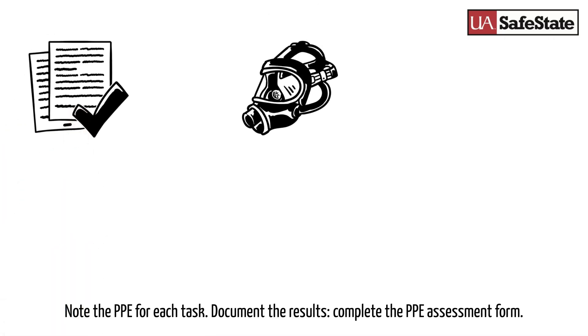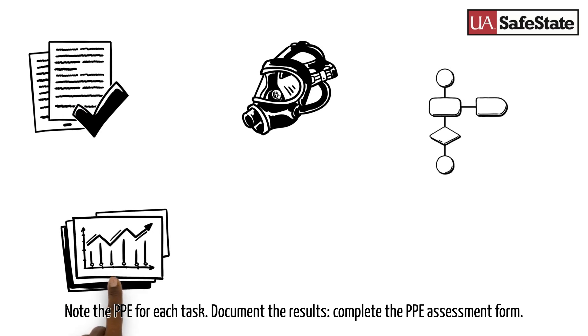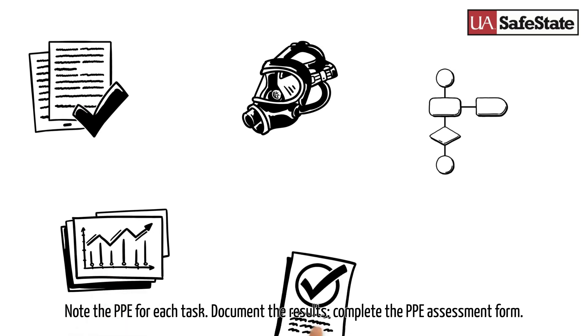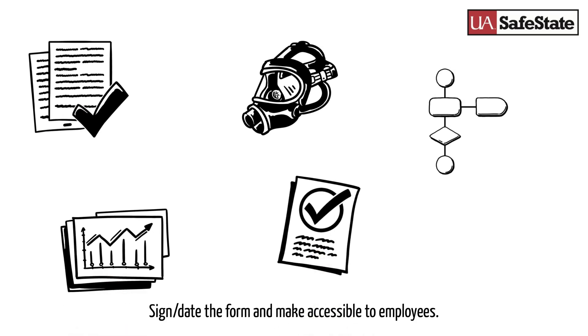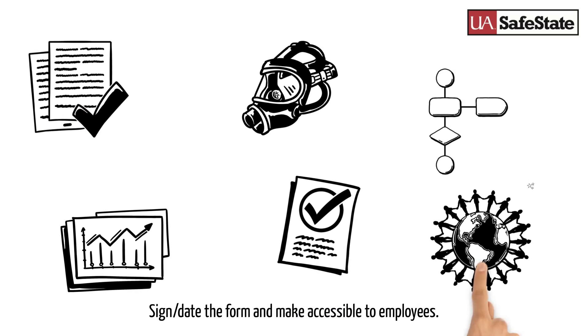Step seven: Note the PPE for each task and document the results. Complete the PPE assessment form, then sign and date the form and make it accessible to employees.